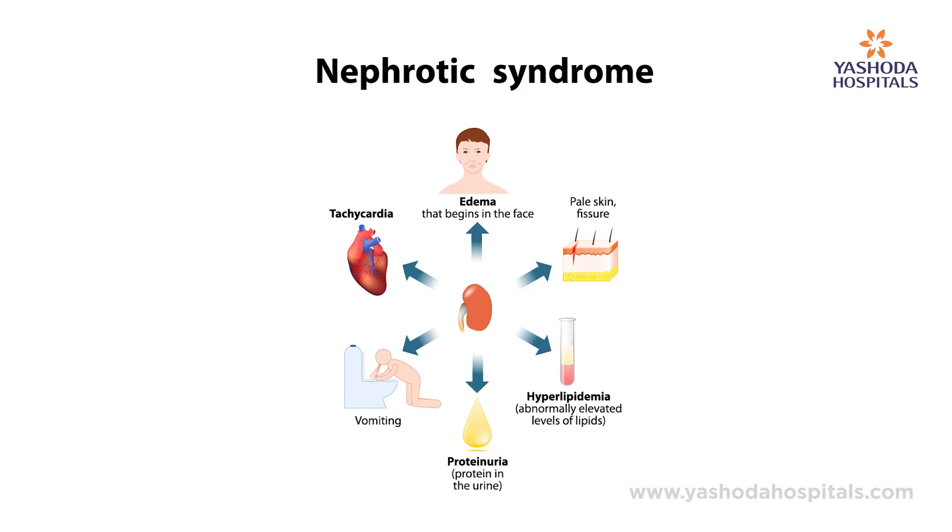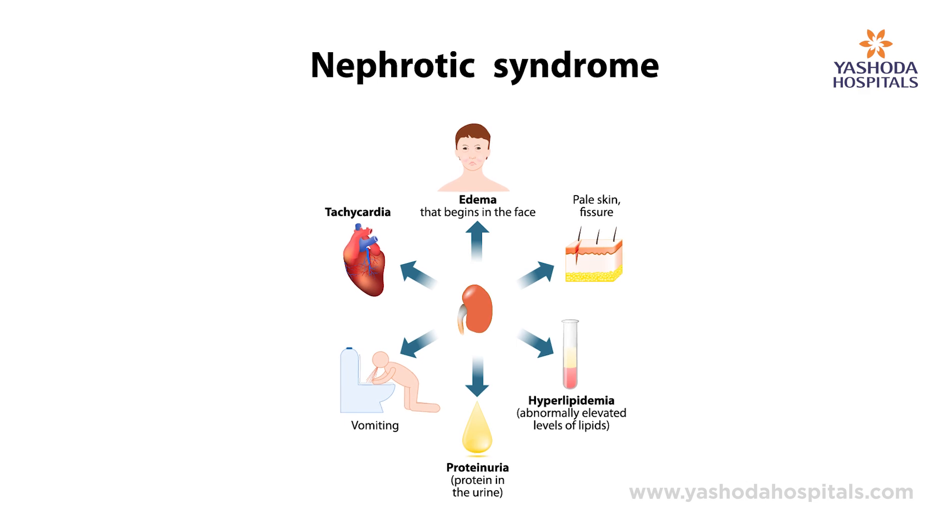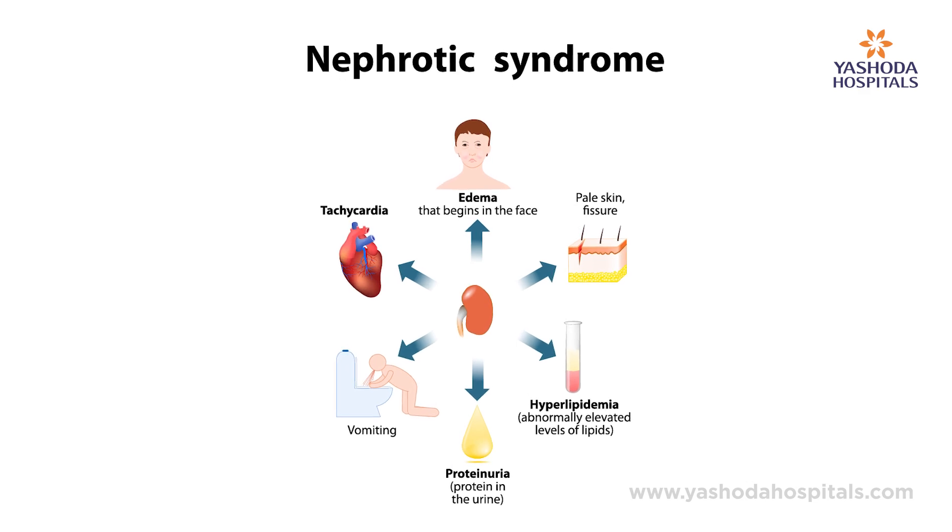One of the important signs of kidney disease is the loss of protein in urine. This can be because of several reasons. One of the important reasons is a disease which is originating in the kidney itself. We call this glomerulonephritis or nephrotic syndromes.